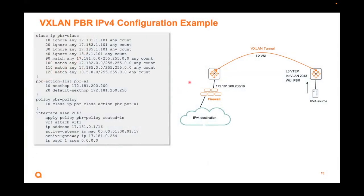Configuration for IPv4: you need to create your class with your matches. You can state what IPs you want to ignore, then match on the rest of the subnet. This is an example of matching on a destination subnet. You can add a count as well to check for hits. After creating your matches and ignores, you create an action list specifying your desired next hop and optionally a default next hop. Then you link them together — class and action — and apply it to the actual SVI using 'apply policy routed in'.